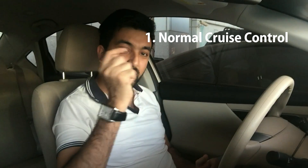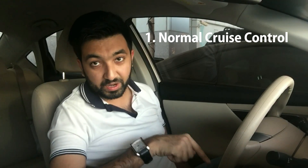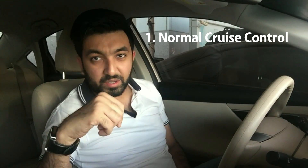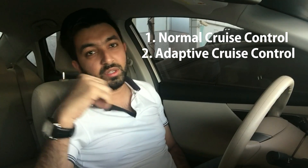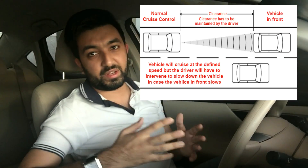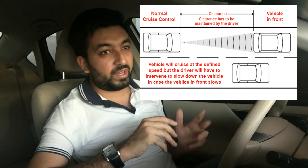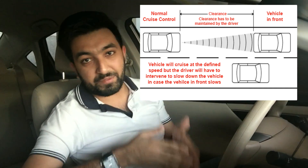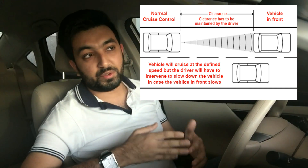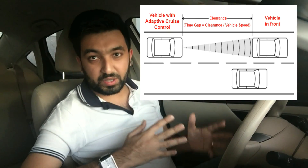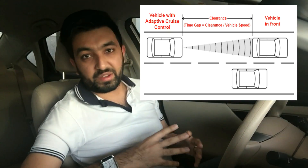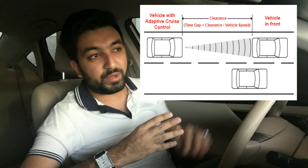Cruise control is of two types: the basic cruise control, which is your regular cruise control that I showed you in my car, and another called adaptive cruise control. The normal cruise control is basically just setting a speed and the car follows that, but you have to intervene if you need to slow down.